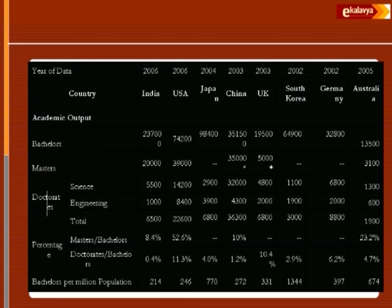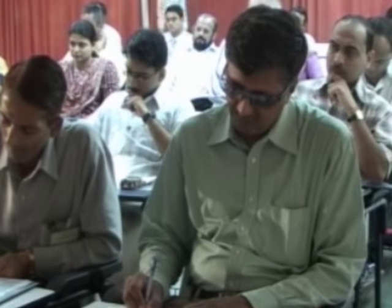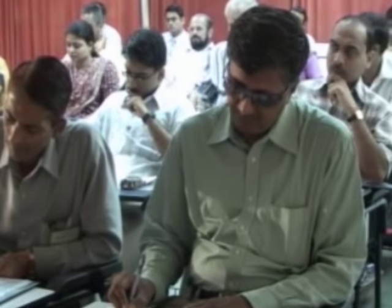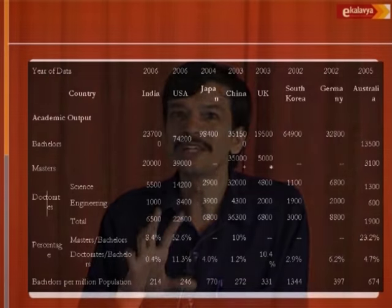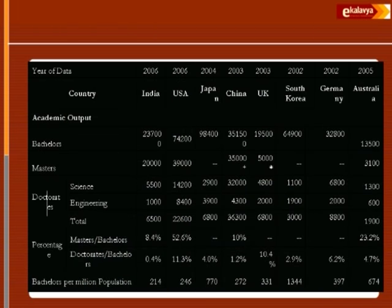Are we over-producing engineers? Bachelors per million population — that is another question. What is the mechanism linking the demand and supply of engineers, and how well does it work? There is a perception that engineering is a good profession, so lots of students at the 10+2 level want to take up engineering. But there is significant unemployment and underemployment of engineers, linked with the quality issue. The interface between industry, academia, and government to regulate supply and demand does not seem to be working properly.